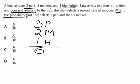What is the probability? That means probability is what you need to find. That Terra selects one pen and then one marker. What we're looking for is probability that she selects one pen, does not return it, and then picks a marker.